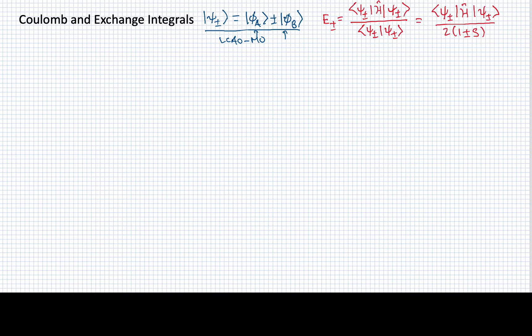When we want to determine what energies this implies, we need to calculate the energy expectation value, which is written formally here. We've filled in what the denominator, which is the overlap integral, turns out to be. What we want to do now is to evaluate the numerator, this part where we have the Hamiltonian operating on this function.